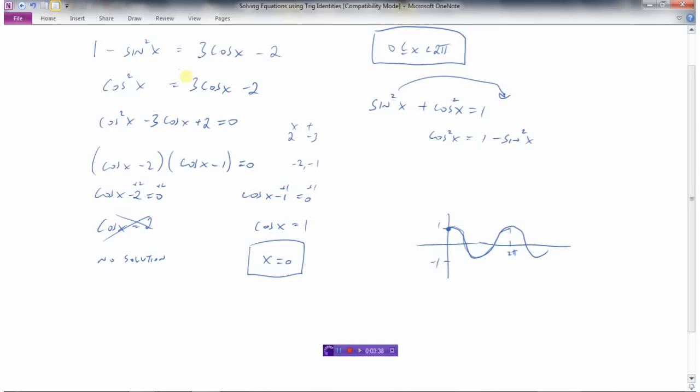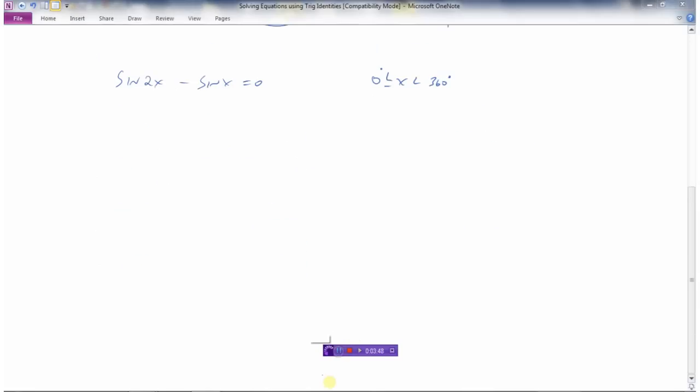So we'll be using some of the trig identities to allow us to change the expression to something that will allow us to solve for the variable. We'll look at some more examples. Let's do this one in degrees. Find all the angles between 0 and 360, including the 0.